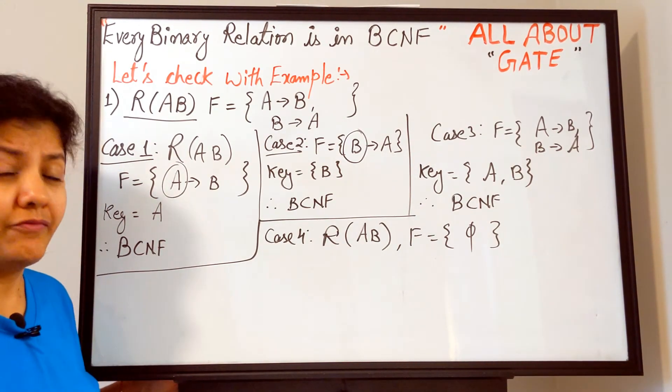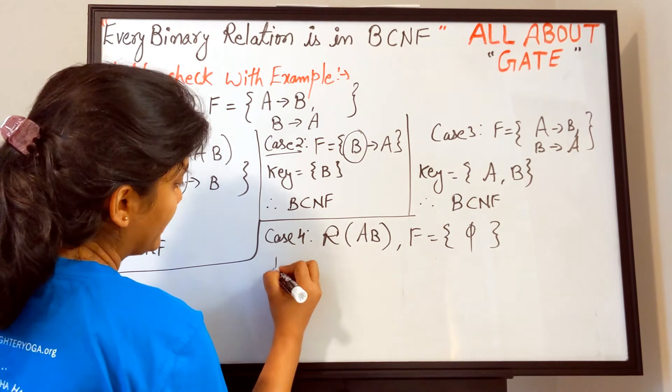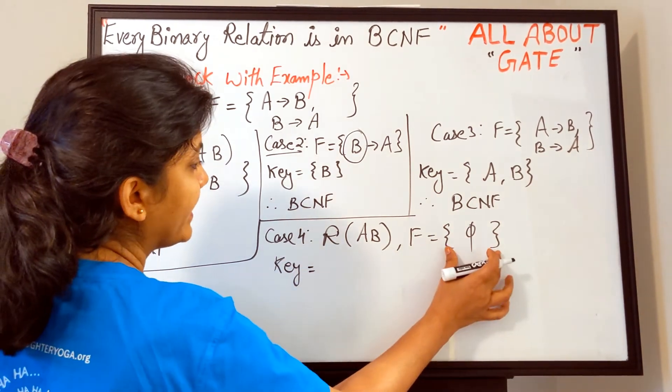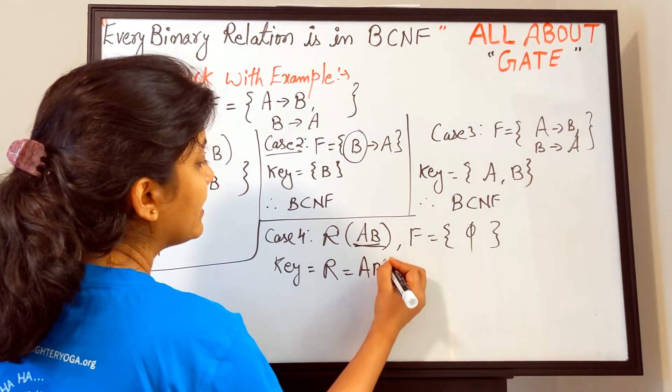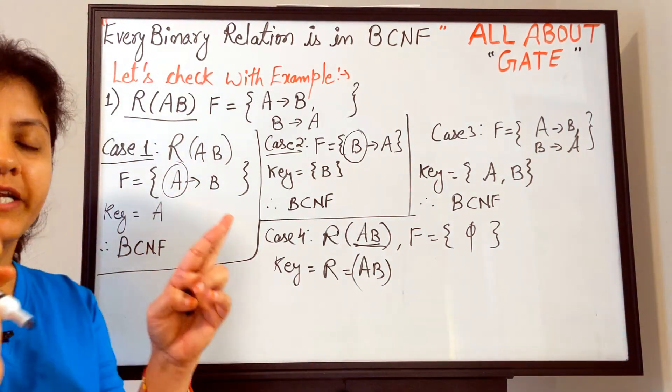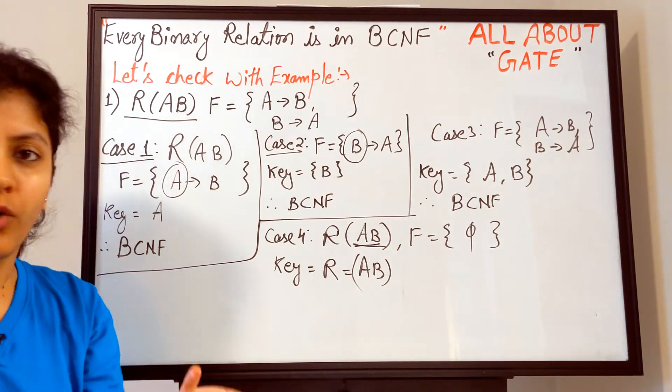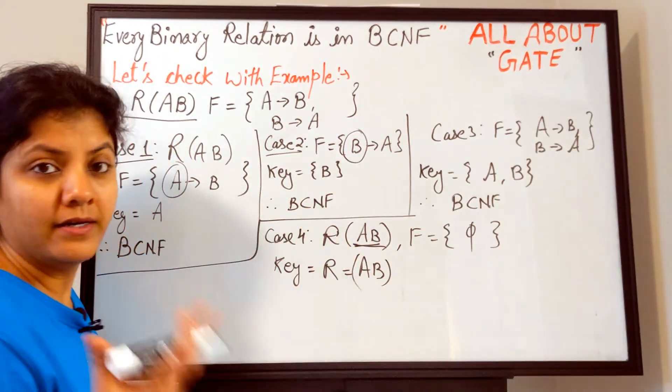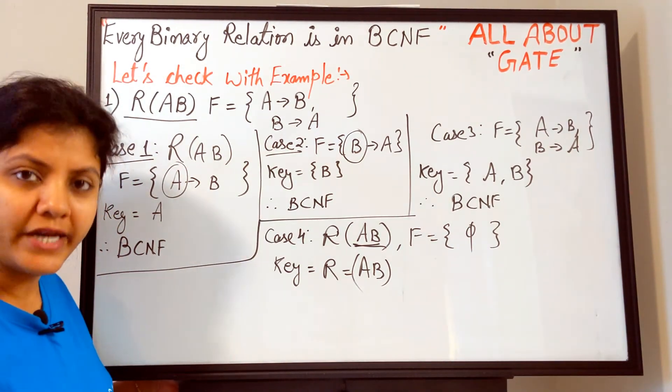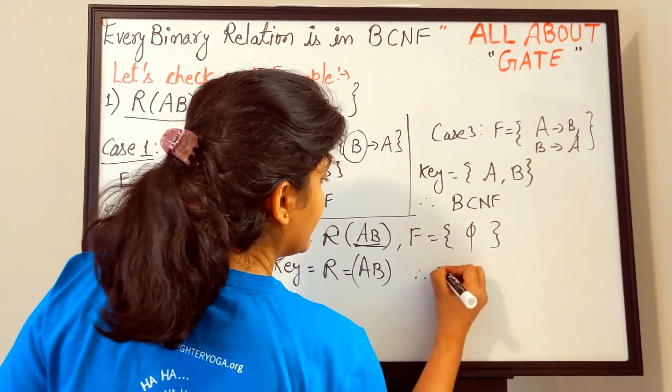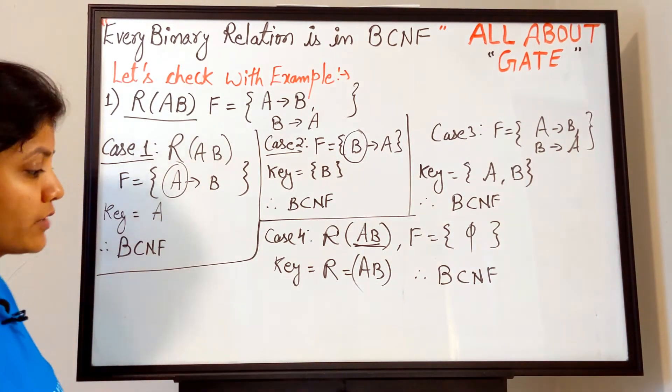But we still have to find out the key of the relation to say this is in which normal form. For that matter, when there is no functional dependency defined, then what becomes a key? The relation R as it is becomes a key. That means AB is a key completely—the set of all attributes together defines as a key. That is a super key always and that itself becomes a candidate key also. Once you have this as a candidate key and super key and you have no functional dependencies which could be checked out, then it says nothing but that the relation is in BCNF.